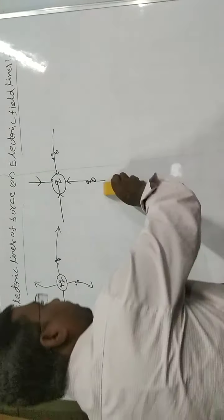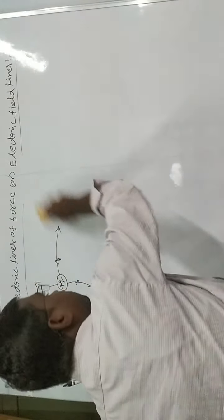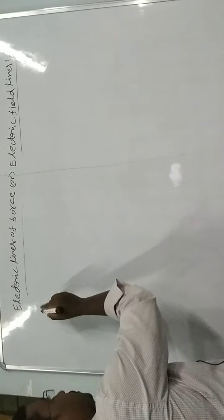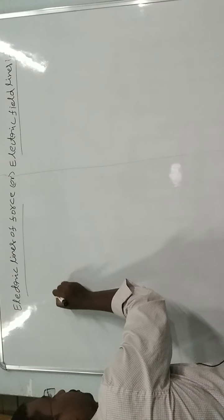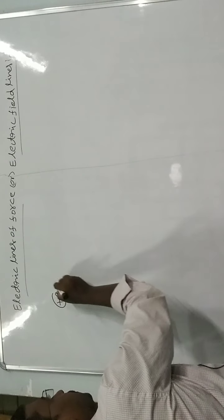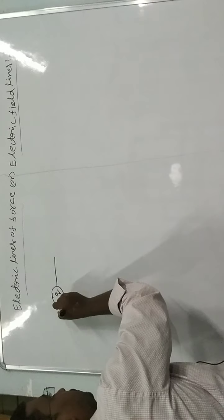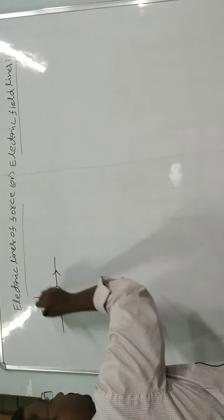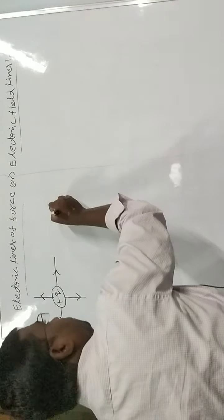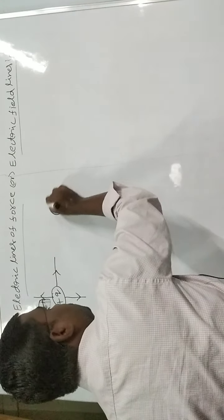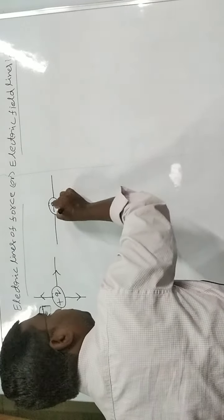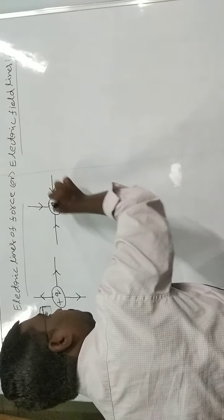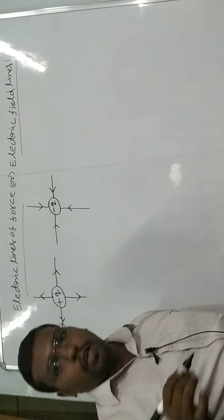To summarize: due to plus Q charge, electric lines of force move away from it. In case of negative charge, these lines move towards it.